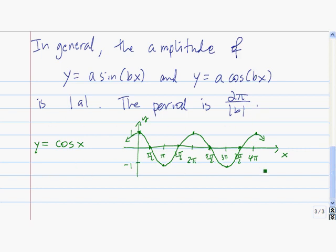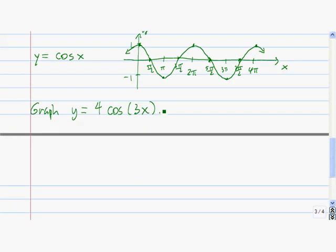Let's do a transformation of this. The first thing we're going to do is find the period and the amplitude. The amplitude is 4, and the period is 2π over 3.